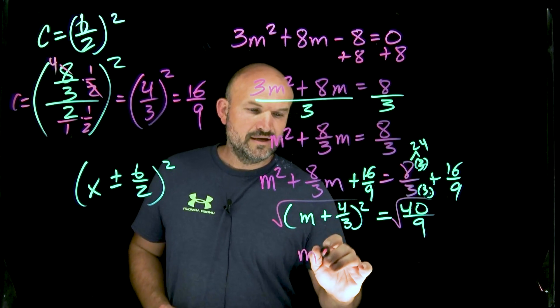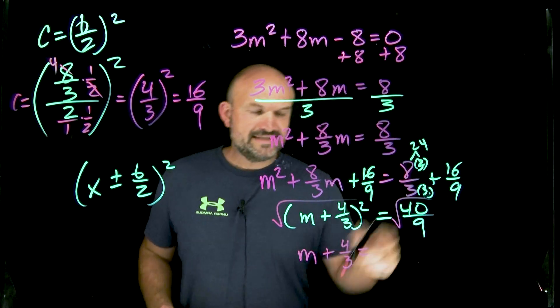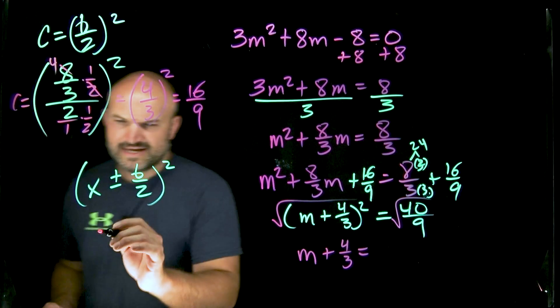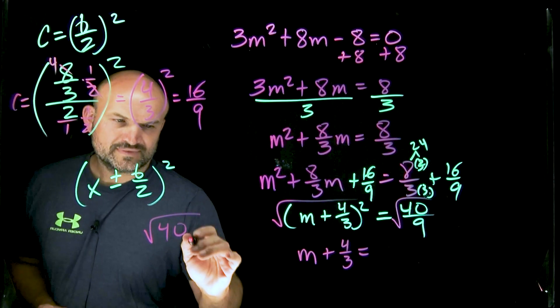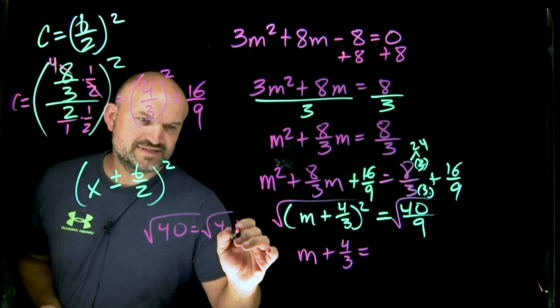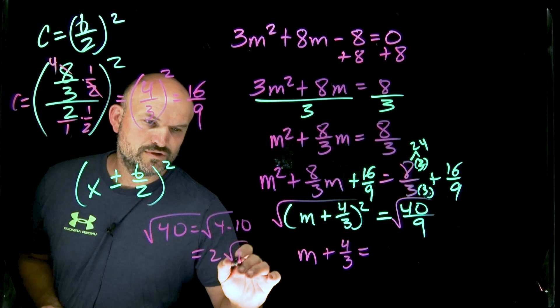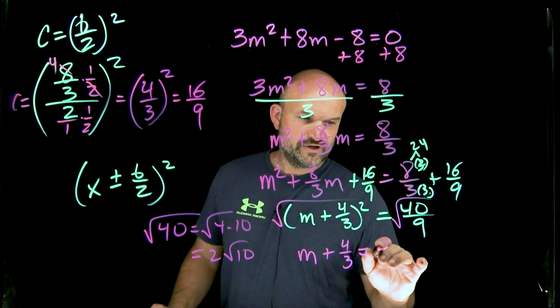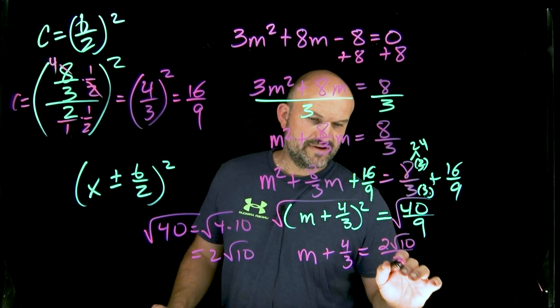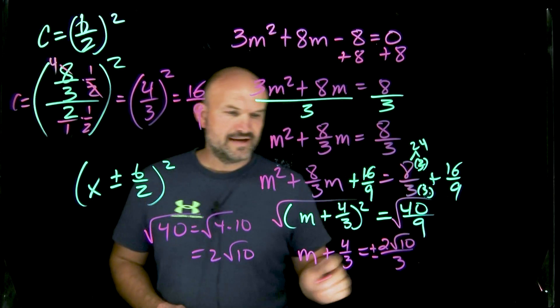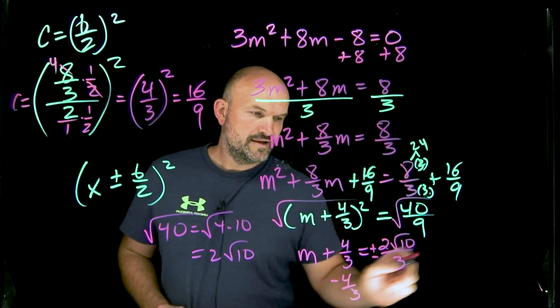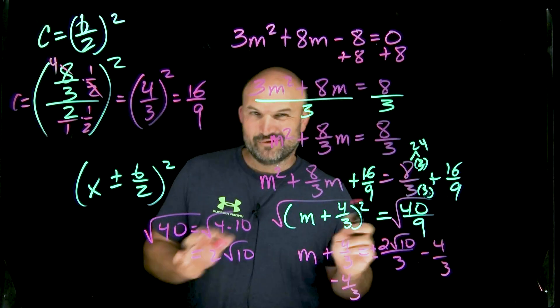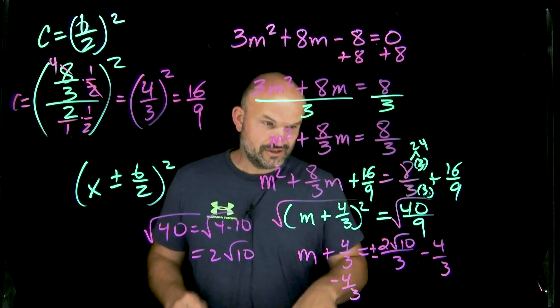That is now going to leave me with M plus a four-thirds is equal to, let's go ahead and simplify the square root of 40. That can be broken down into a 4 times 10, which is equal to a 2 square root of 10. And then the square root of 9, I can leave that as a 3. So therefore, a 2 square root of 10 divided by 3. And don't forget, that's a plus or minus. And then I just need to subtract a four-thirds. So I can write my answer nice and neat to look like this.